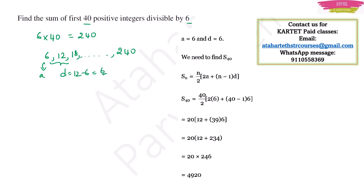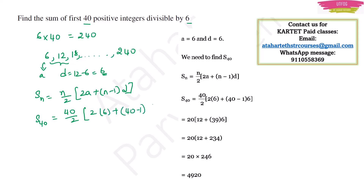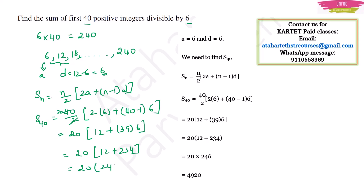Now apply the formula: S_n = n/2 × [2a + (n−1)d]. Substituting: S_40 = 40/2 × [2(6) + (40−1)(6)] = 20 × [12 + 234] = 20 × 246 = 4920. So the sum of the first 40 positive integers divisible by 6 is 4920.